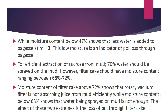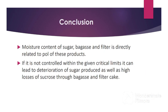For efficient extraction of sucrose from mud, 70 percent of water should be sprayed on the mud. Filter cake should have moisture content ranging between 68 to 72 percent. Moisture content above 72 percent shows that the rotary vacuum filter is not absorbing juice from the mud efficiently, while moisture content below 68 percent shows that water being sprayed on the mud is not enough. The effect of these two extremes is the loss of pol through filter cake. Moisture content of sugar, bagasse, and filter cake is directly related to the pol of these products; if not controlled within the critical limits, it can lead to deterioration of sugar quality and high losses of sucrose through bagasse and filter cake.